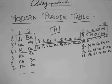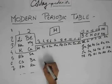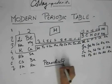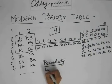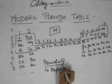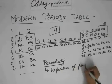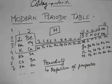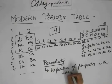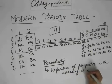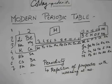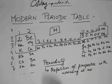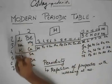Now, in this periodic table, there is something called periodicity. What is periodicity? It's basically the repetition of properties with increasing atomic number. So what we see is that after each period, there is a repetition of properties.